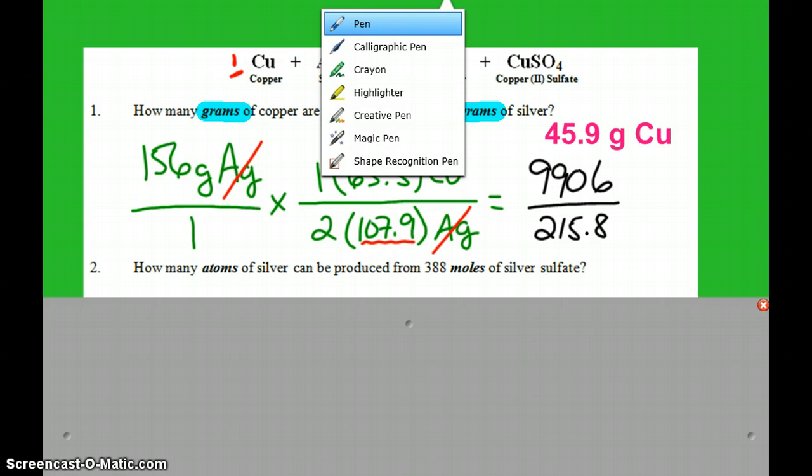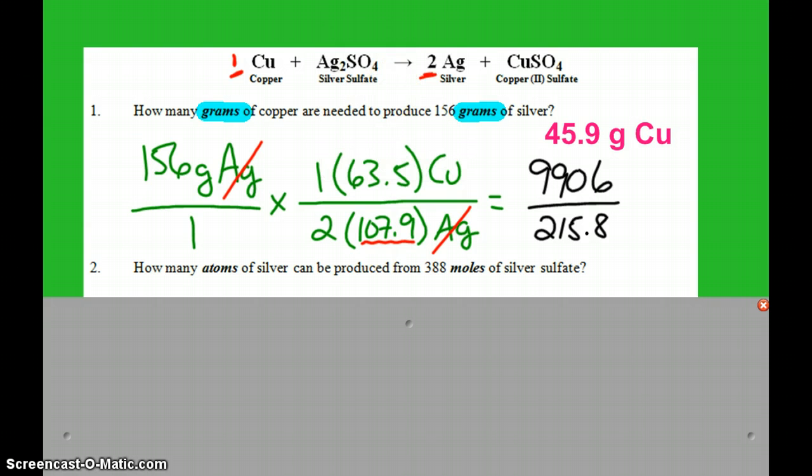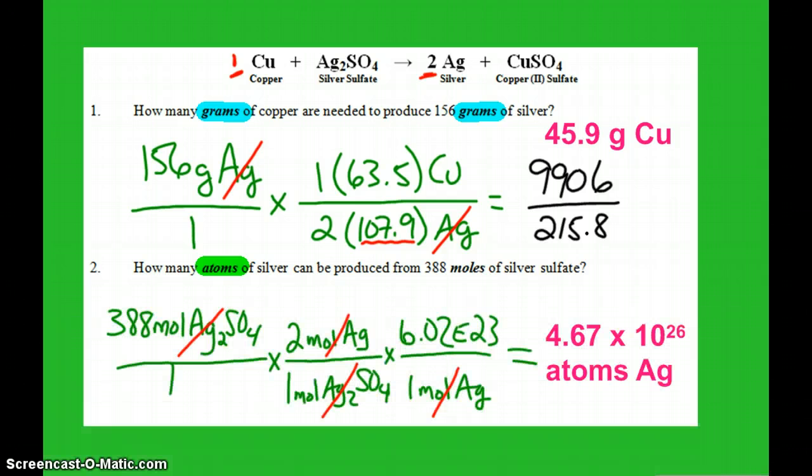The next question asks about atoms. And so whenever we see atoms or molecules, we know that we've got Avogadro in the house. And so it's just like the liters question, except we end with the Avogadro fact. And so here you see I have 388 moles of the silver sulfate. It's a 2 to 1 ratio of silver sulfate and changing to silver. And then the last step is the fact that 1 mole of silver is 6.02 E to the 23rd atoms. Ones are on the bottom, so 388 times 2 times Avogadro. And that's how I got that answer.